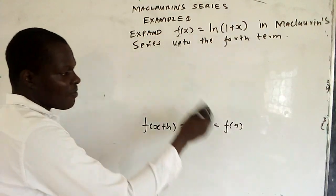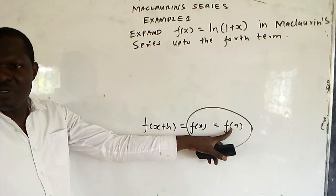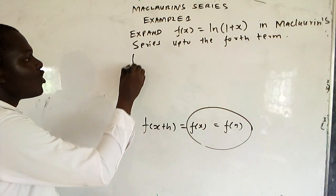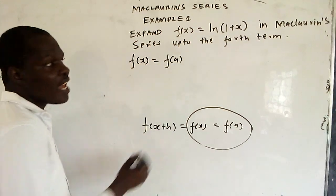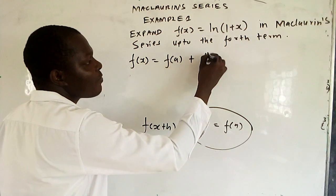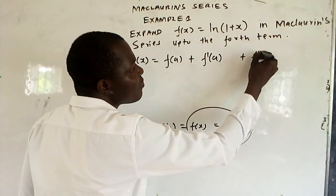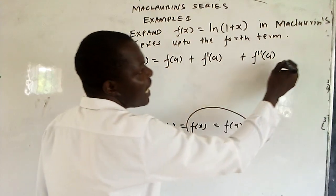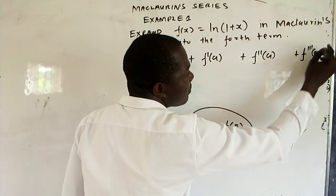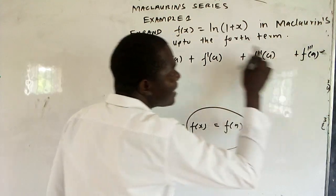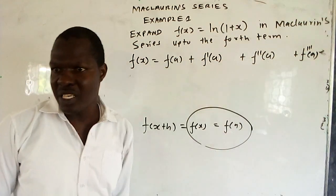Meaning, if you want to expand f(x), you take this part. You start from f(a), so f(x) is equal to f(a). Then you differentiate f(a) for the first time, leave some space, differentiate for the second time, leave some space, differentiate for the third time — because you'll be told to reach the fourth term: first term, second term, third term, fourth term.